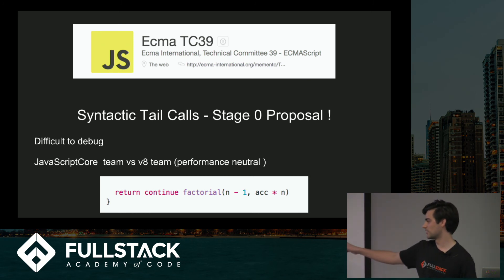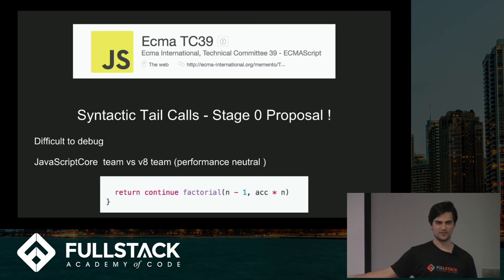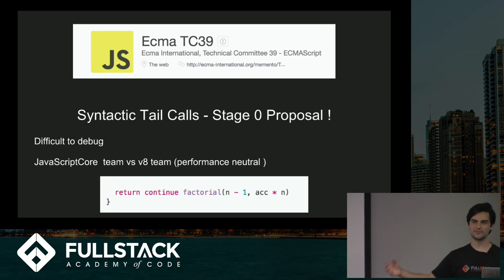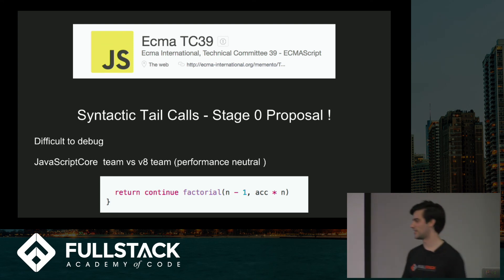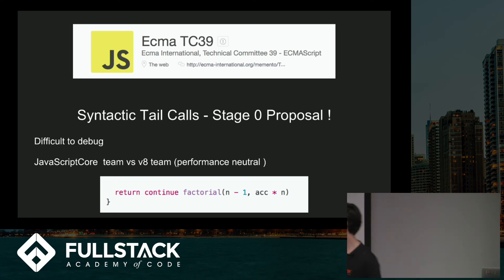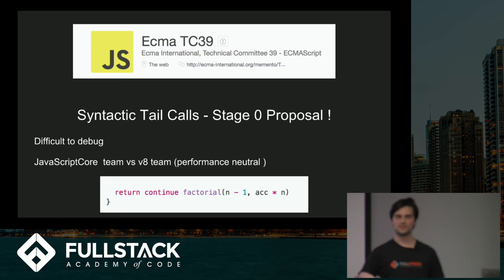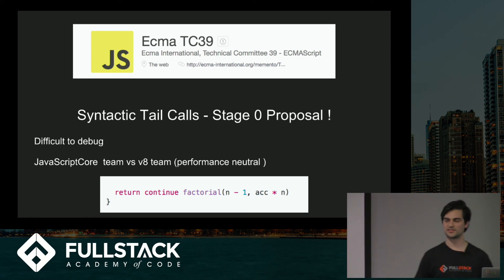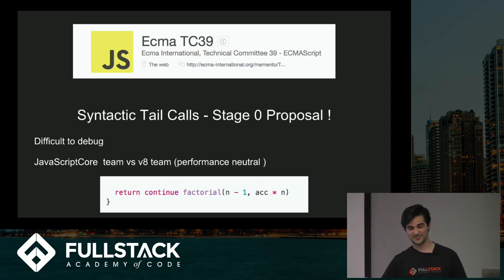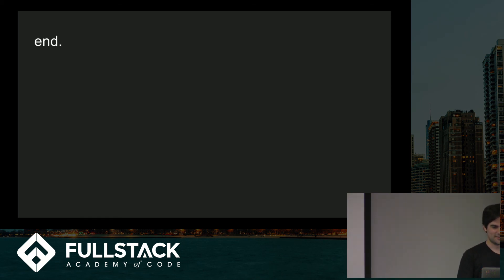The syntactic tail calls proposal wanted to make it optional — almost like a pay-as-you-go in terms of performance costs. They wanted to probably have something like a 'return continue' keyword which would specify that you want to do the tail call or not. And even that stage zero proposal has kind of been almost forgotten at this point. And that is the end — thank you.